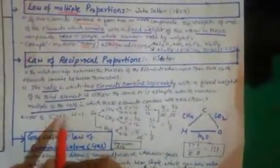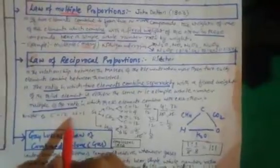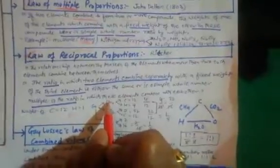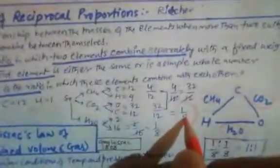For example: carbon combines with oxygen to form CO₂, oxygen combines with hydrogen to form H₂O, and carbon combines with hydrogen to form CH₄. In CH₄, hydrogen is 4 and carbon is 12, giving a ratio of 4:12. In CO₂, oxygen is 32 and carbon is 12, giving a ratio of 32:12.